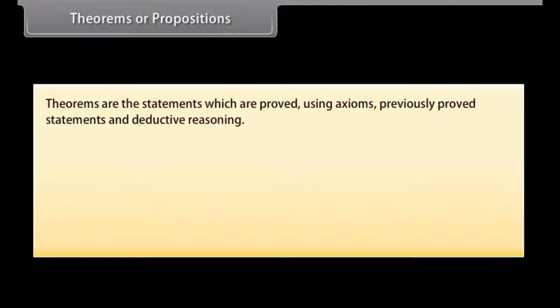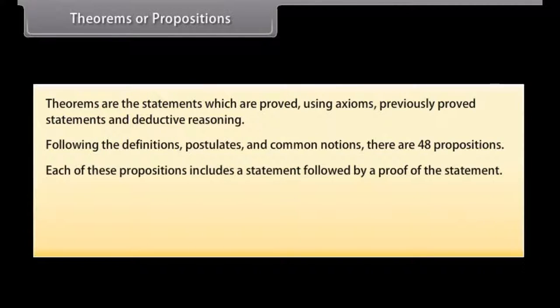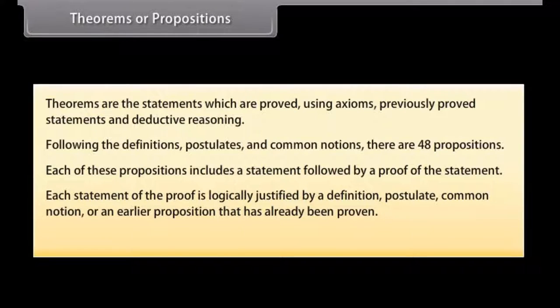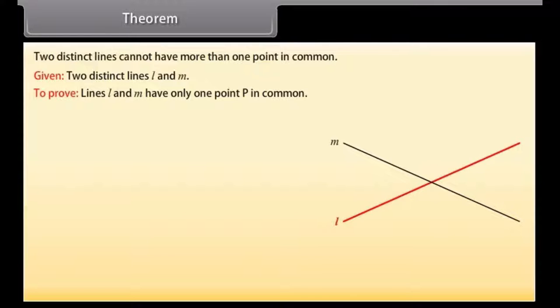Theorems or Propositions. Theorems are the statements which are proved using axioms, previously proved statements and deductive reasonings. Following the definitions, postulates and common notions, there are 48 propositions. Each of these propositions includes a statement followed by a proof of the statement. Each statement of the proof is logically justified by a definition, postulate, common notion or an earlier proposition that has already been proven.